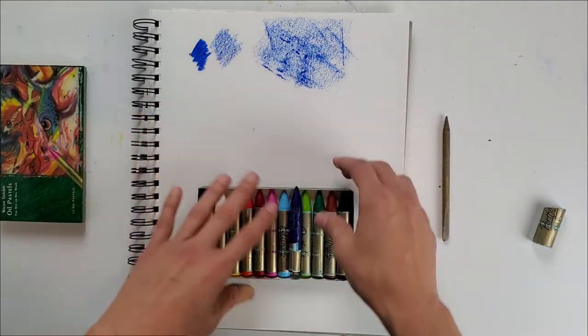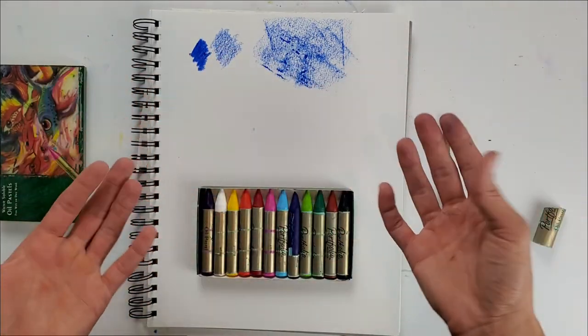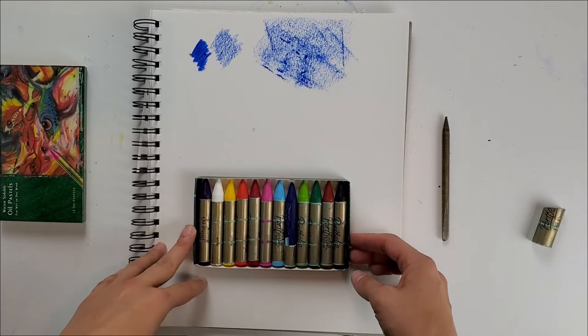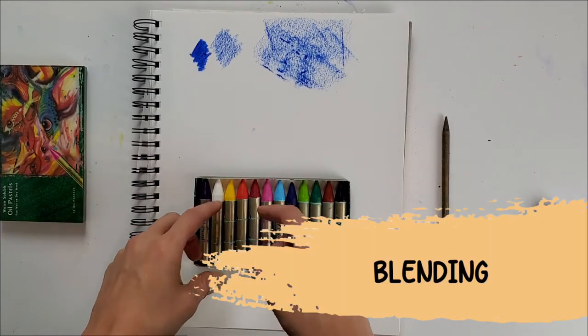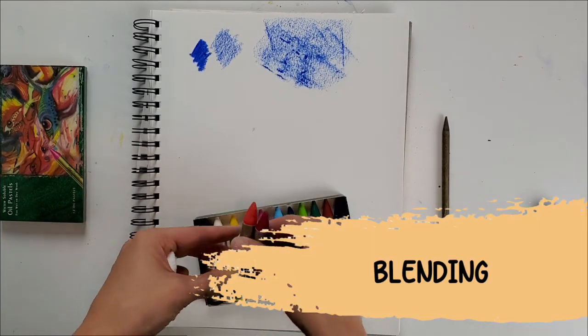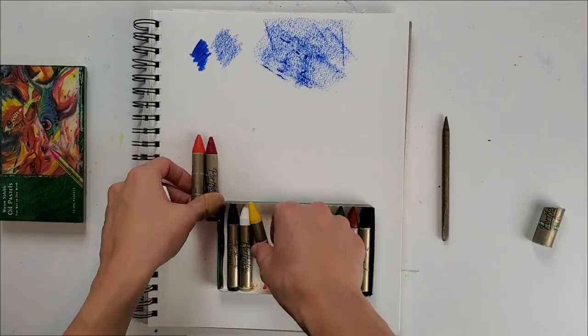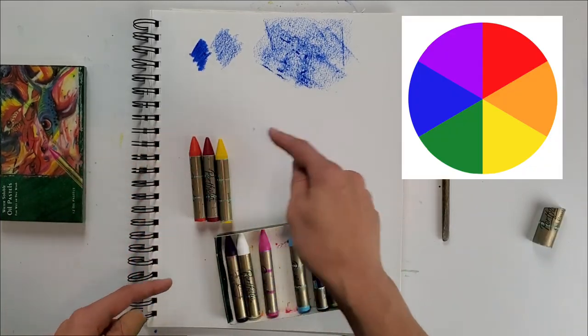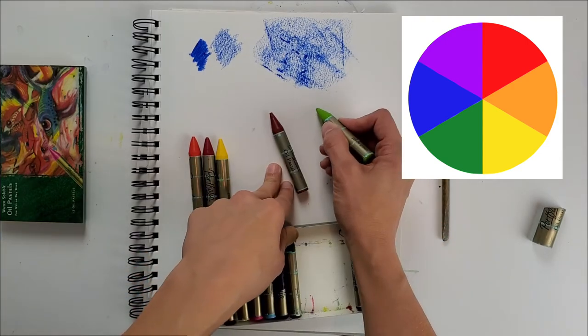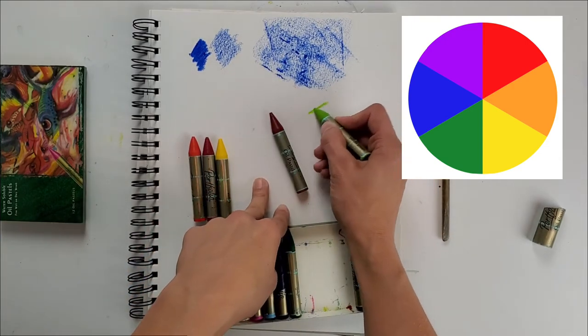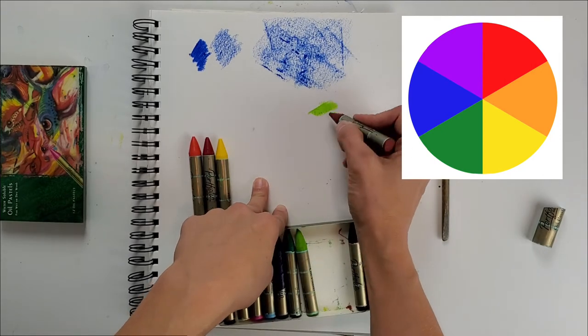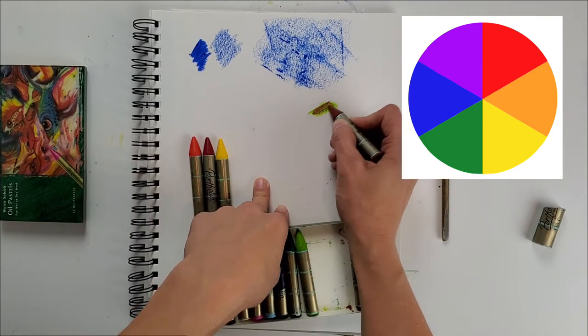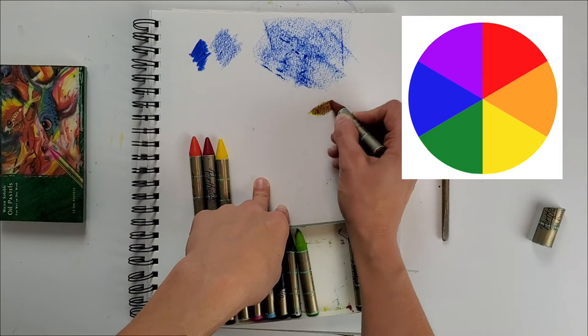You can use the side of your oil pastel to block in large areas of color like skies or grass. The other really great thing about oil pastels is you're able to blend them. You do want to consider the color wheel when you are blending colors. Stick to colors that are right next to each other on the color wheel, otherwise if you start going across the color wheel, for example red and green or complementary colors, you often come up with kind of a brownish color.